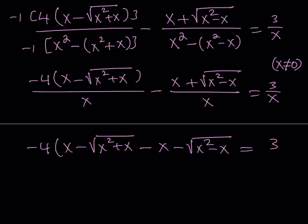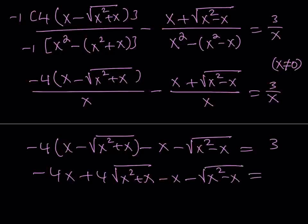So here, let's go ahead and distribute the negative 4: negative 4x plus 4 times the square root of x squared plus x, minus x minus the square root of x squared minus x equals 3.